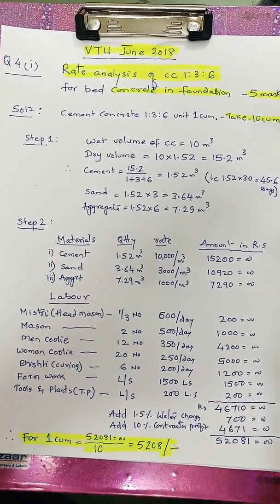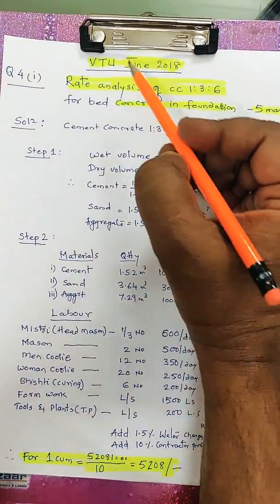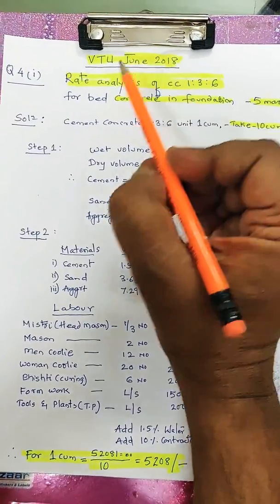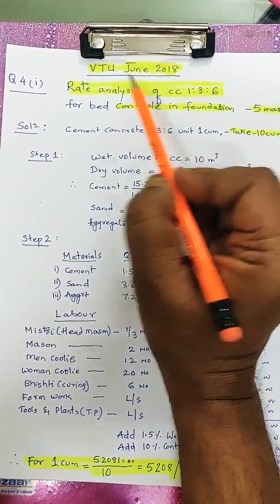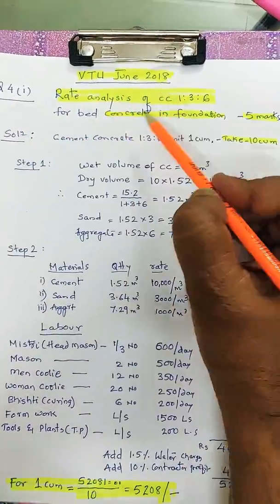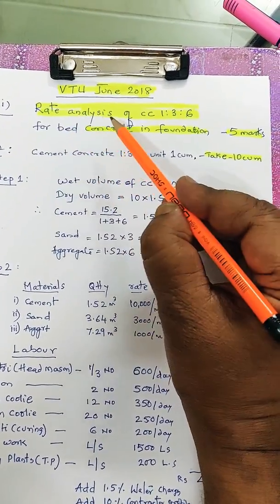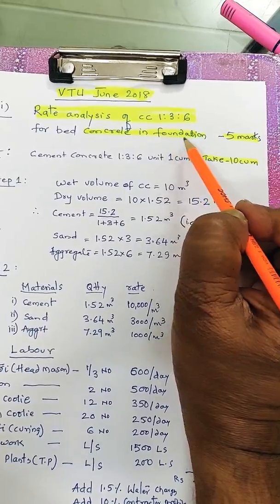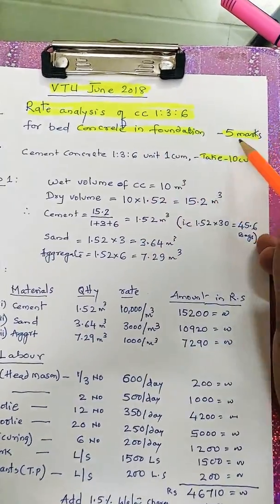Today I am going to solve one problem of VTU June 2018 on rate analysis. It is question number 4C. They asked rate analysis of CC 1:3:6 for bed concrete in foundation. It carries 5 marks.